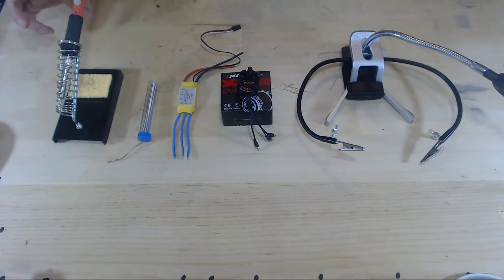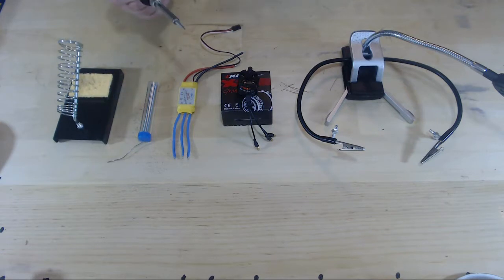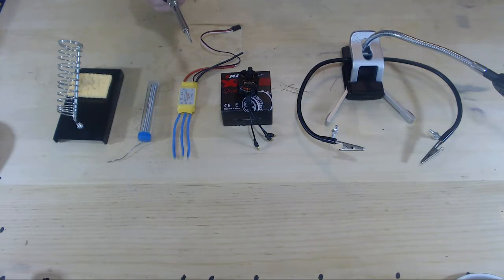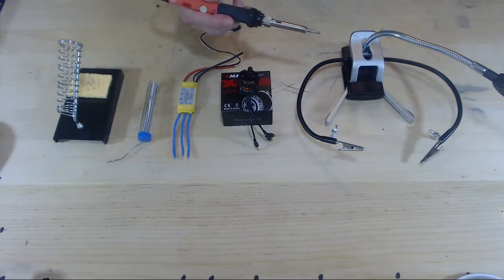And a bit of beginner soldering iron advice. After every bit of soldering you do, you should wipe off the solder from the soldering iron onto the wet sponge like this. And that will make sure that you get the solder off your tip and that will make your soldering iron live a long and wonderful life. So with that I will see you over there where we will start soldering.